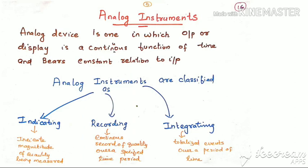Now let us see some analog instruments. An analog device is one in which the output or display is a continuous function of time and bears constant relation to the input. They can be classified as Indicating, Recording, and Integrating. Indicating instruments show the value of a quantity being measured, like a voltmeter or ammeter. Recording instruments continuously record over a specified period of time. Integrating instruments measure and totalize events over a period of time.